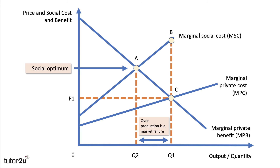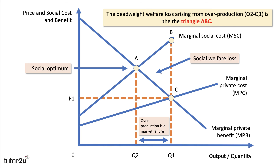The social optimum is where we take into account the externalities — where marginal social cost meets marginal benefit. But in the absence of that, the market failure leads to a loss of social welfare, and that deadweight loss of welfare is shown by the triangle A, B, C.